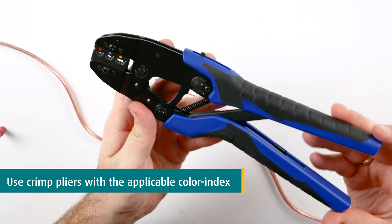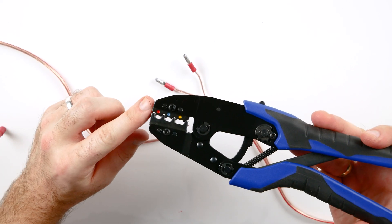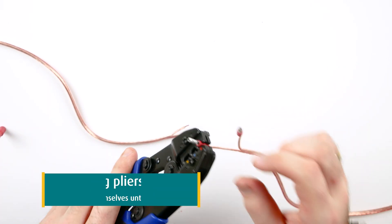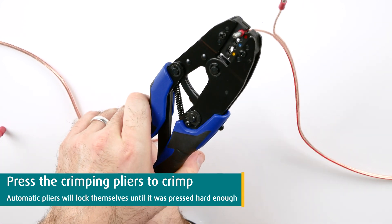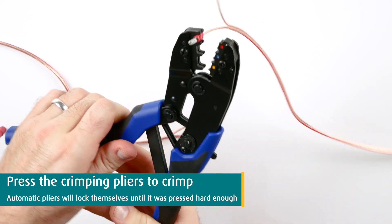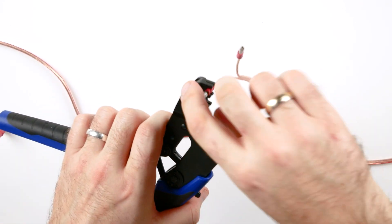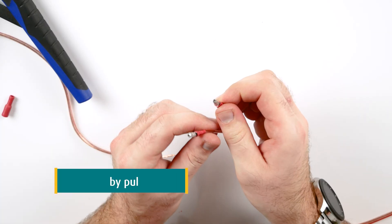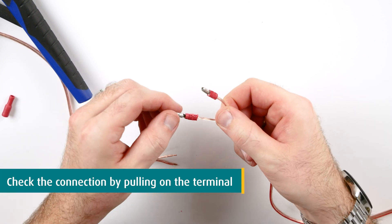Use the correct color index profile of the crimp pliers and press it firmly. If you use an automatic plier like this one, it will lock itself until you have applied sufficient force. When crimped, check the connection by pulling on the terminal to make sure that it sits tightly and doesn't come off.